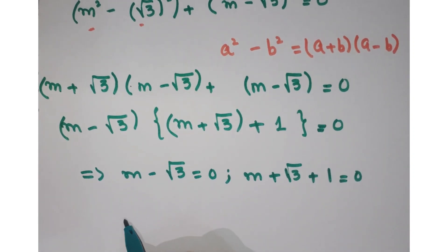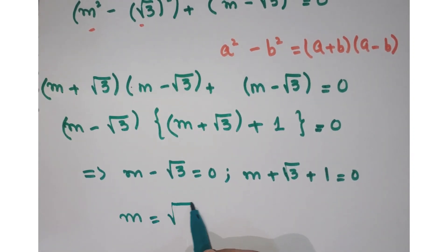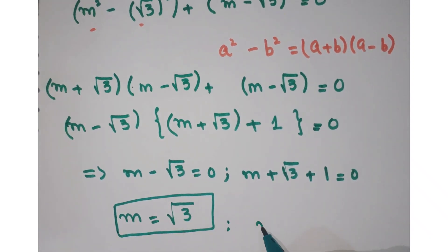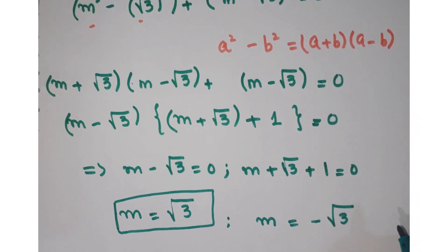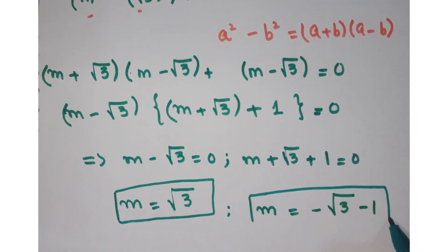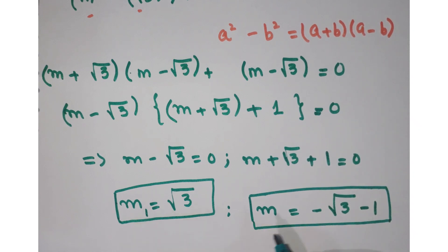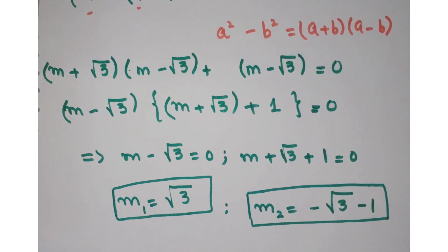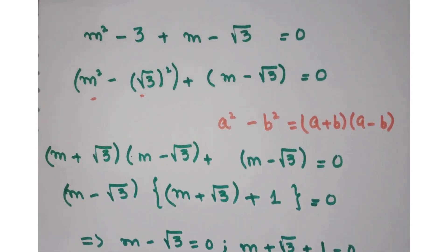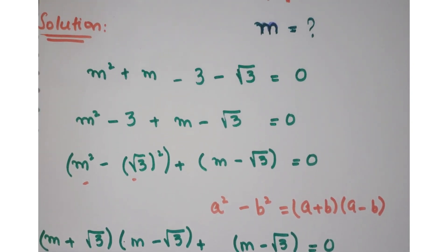Therefore m equals under root 3 — this is one solution of m. The second solution of m is m equals minus under root 3 minus 1. So these are the two required solutions. I hope you understood it, and if you like it, kindly subscribe to my channel. Thanks for watching.